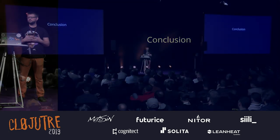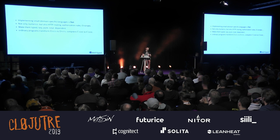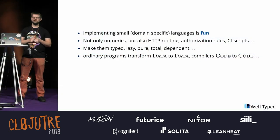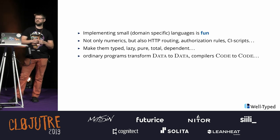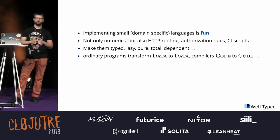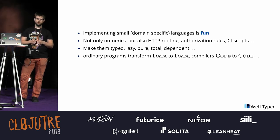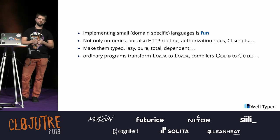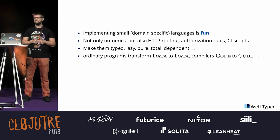To conclude: implementing small domain-specific languages is very fun — you should try it. And this is a language used in production to make that library go fast, so it's not even a joke. You don't need to think about numerics. You can compile and optimize your HTTP routing, authorization rules with complicated stuff, CSS scripts — I don't want to write bash by hand — UI toolkits, and a lot of things. Ordinary programs take data in and push data out; compilers take code in and push code out. And code is data, so there's really no difference. It's that simple. Thank you.